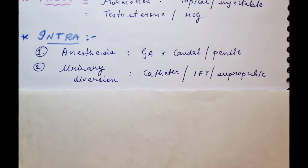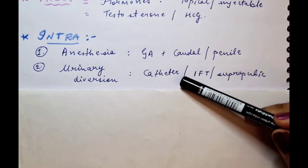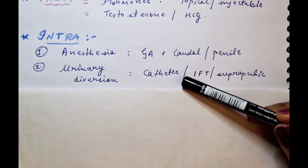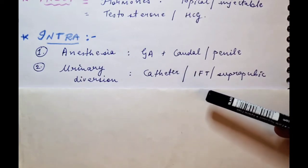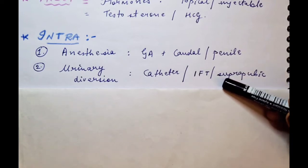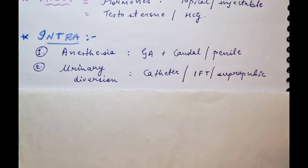Urinary diversion is an important consideration because it affects your intraoperative technique and also helps through the post-operative period for the urethra to form and mature. For the catheter, the red rubber catheter is out of date, and the Foley's catheter is not preferred because its rubber material is quite irritating and the balloon inside can cause damage to the urethra. Some centers prefer the silicone catheter; we used to use an infant feeding tube sized according to the meatal opening. For more proximal cases where urinary diversion is needed for a longer period, and in severe cases associated with other anomalies, even suprapubic diversion is considered.